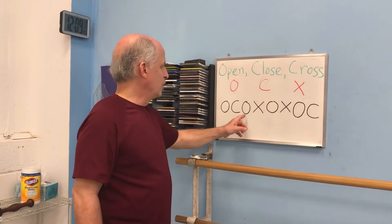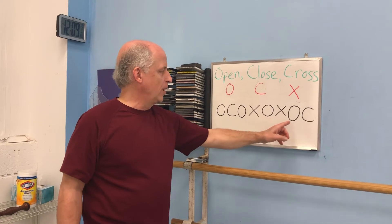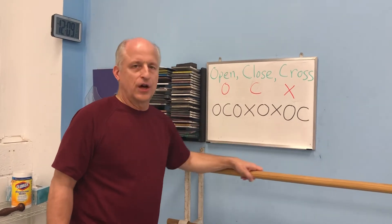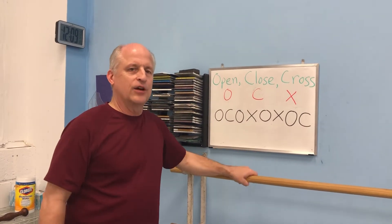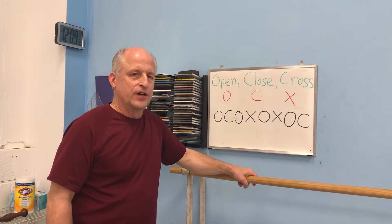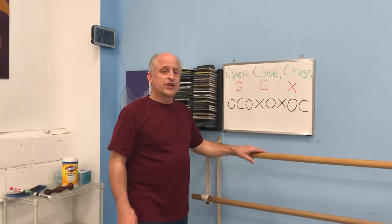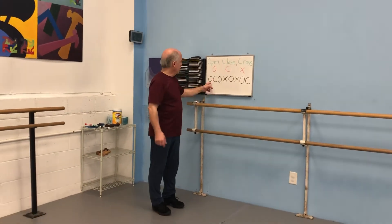I've made an example here that's eight: open, close, open, cross, open, cross, open, close. Of course they can be in any order and the child is encouraged to use their creativity. Perhaps if you have more than one child, they could each write one and after they learn how to dance it, exchange and try someone else's.